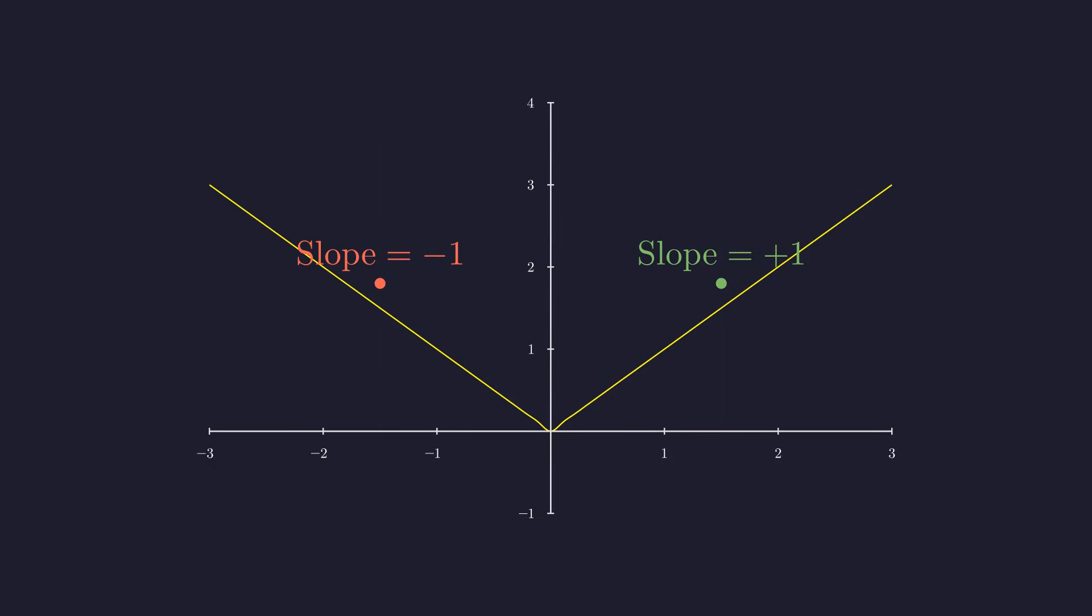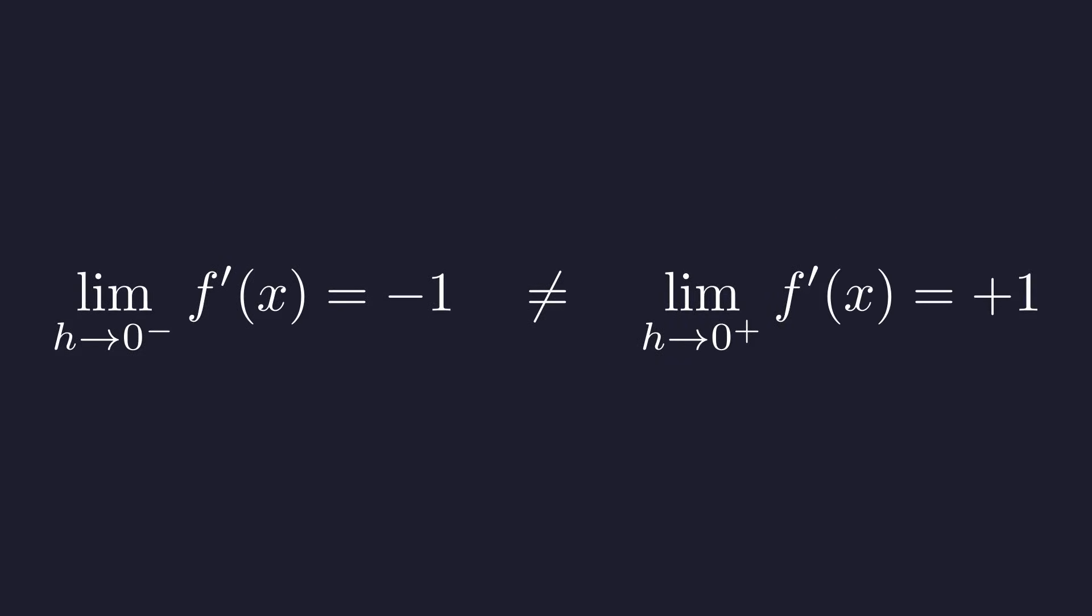The left-hand limit of the derivative is negative one, while the right-hand limit is positive one. Since they don't match, the derivative at x equals zero does not exist.